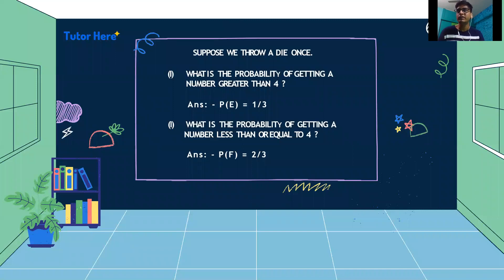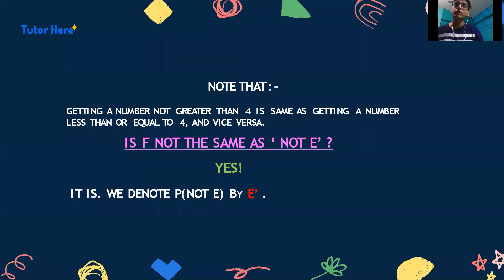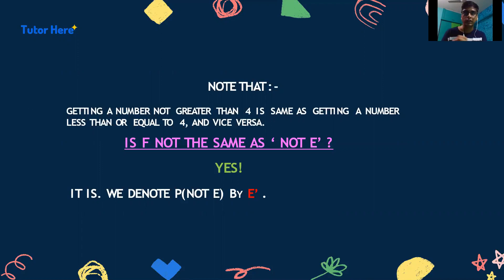In the previous video, we saw that if we throw a die once, the probability of getting a number greater than 4, denoted by E, is 1/3, and the probability of getting a number less than or equal to 4, denoted by F, is 2/3. We can note that getting a number not greater than 4 is the same as getting a number less than or equal to 4, and vice versa.